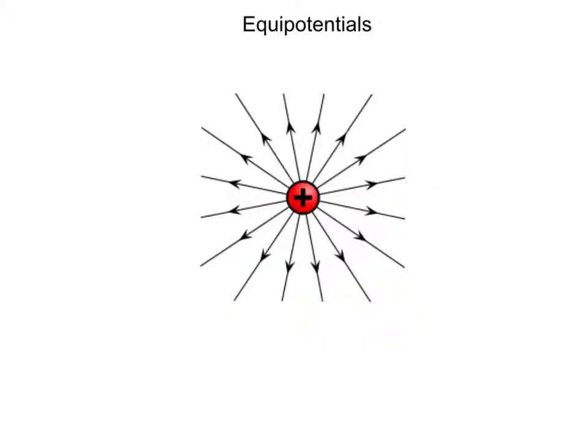To begin exploring the connection between electric potential and electric field, let's consider a single positive point charge. The electric field around that charge would look like this — it points away from that positive charge. Now, if we were to go to some point away from that charge, say to this point right here, we could find the electric potential at that point using V equals KQ over R.